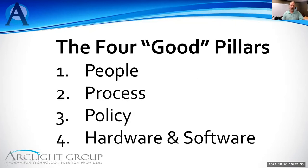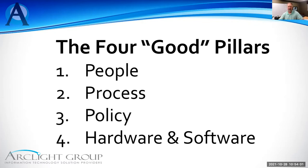The four good pillars are: people, process, policy, and hardware and software. Your people are number one, and this is often overlooked because technology guys want to throw hardware and software at the problem. But your people are the first line of defense. If your employees are willing to click on every single link that comes through email, your organization is in much danger. Your people need to be trained and also tested on their training — someone needs to be sending phishing emails to your employees.